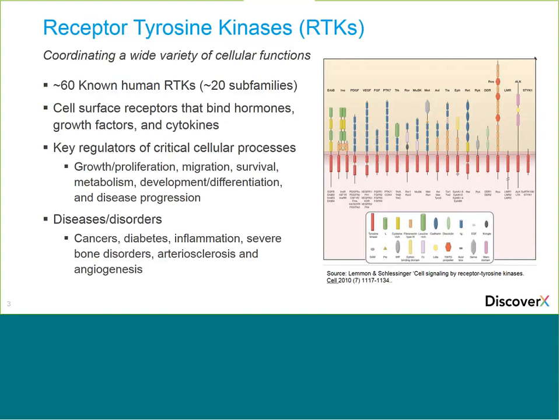These are cell surface receptors. They're mainly monomeric but do dimerize upon ligand binding. Their endogenous ligands are hormones, growth factors, and cytokines, which bind to their N-terminal extracellular region, which can be quite large compared to their overall structure. There is a small transmembrane alpha-helical region in the middle, followed by the C-terminal domain, which in the RTK case has the tyrosine kinase activity. These receptors are involved in many critical cellular processes — cell proliferation, survival, metabolism, and differentiation — and in many diseases such as cancer, inflammation, and diabetes.